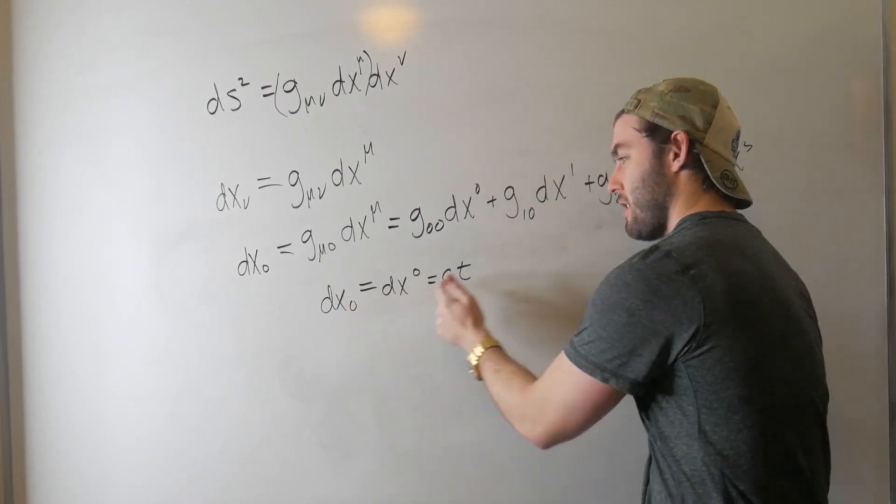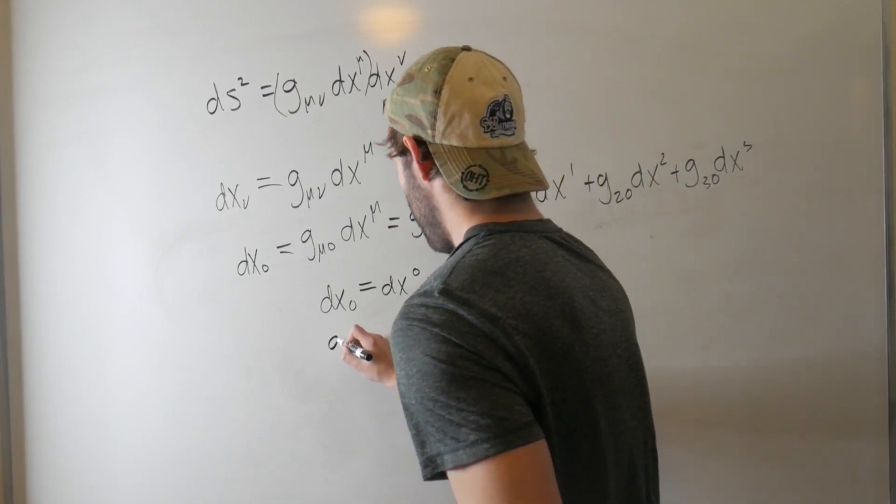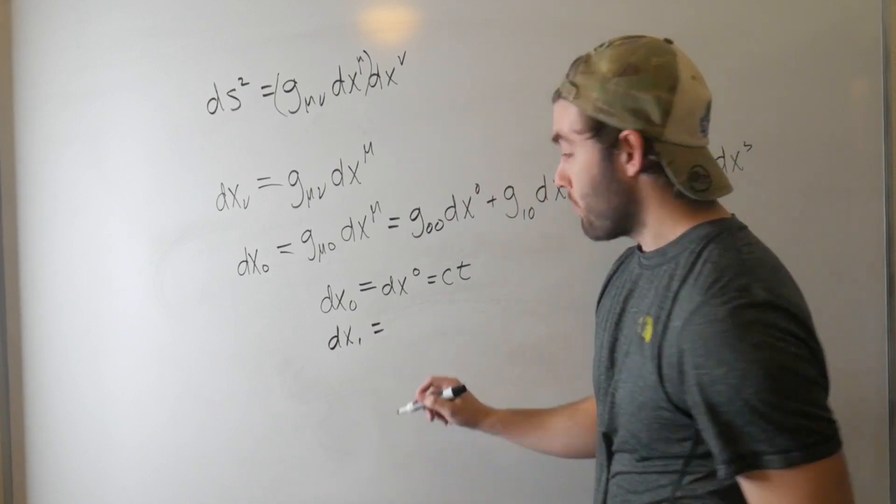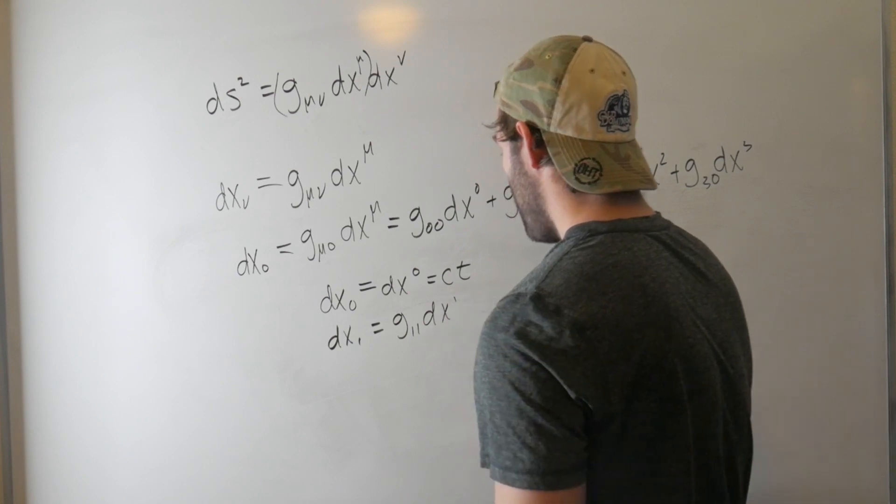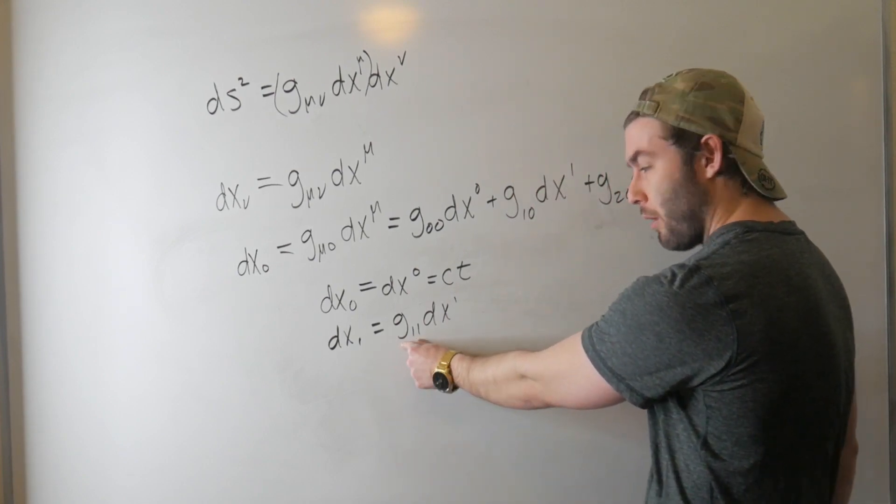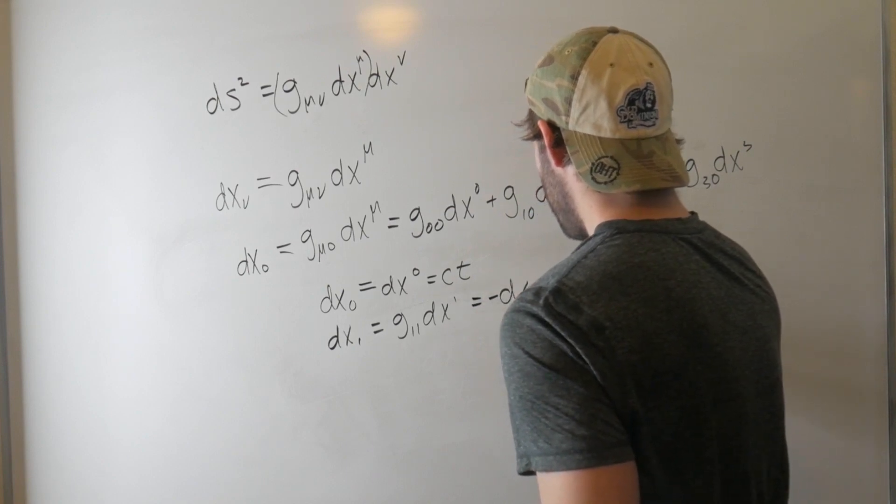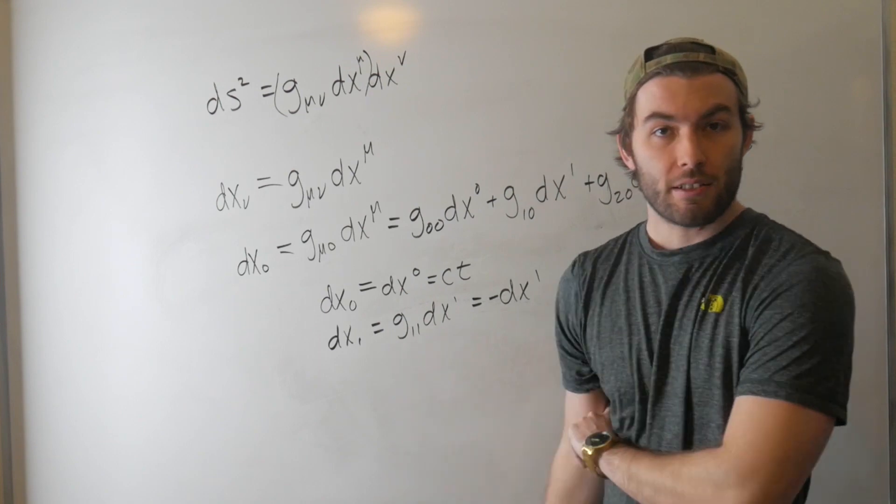So in this case, the subscript is equal to the superscript. But if we go to, say, dx_1, dx_1, well, the only term that's going to survive is the diagonal part with the metric. So this is going to equal g_11 dx^1. But with the Minkowski metric, g_11 is minus. So this is equal to minus dx^1. And the same goes for dx_2, dx_3, et cetera.